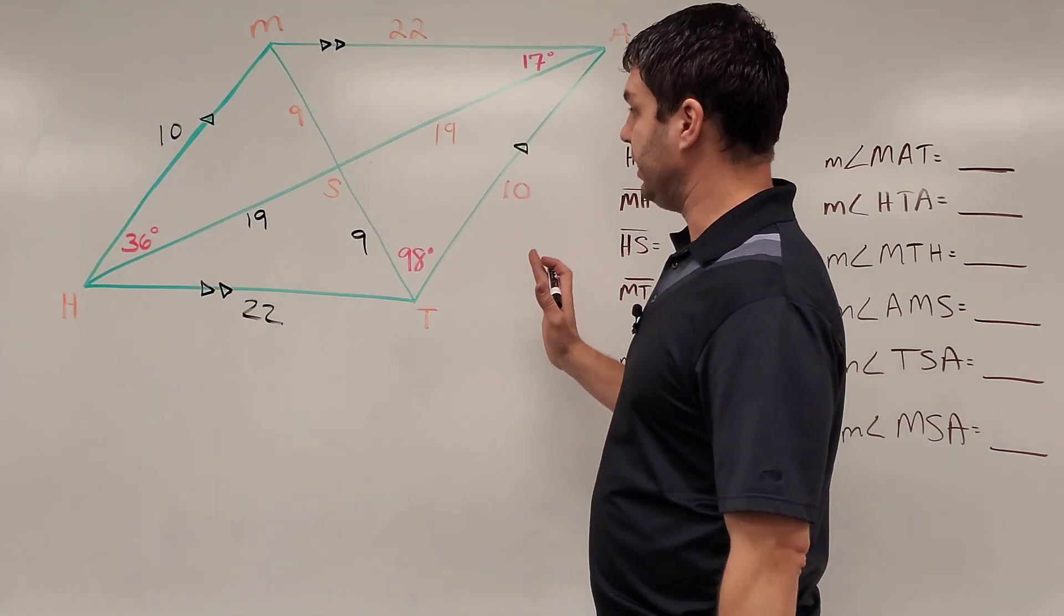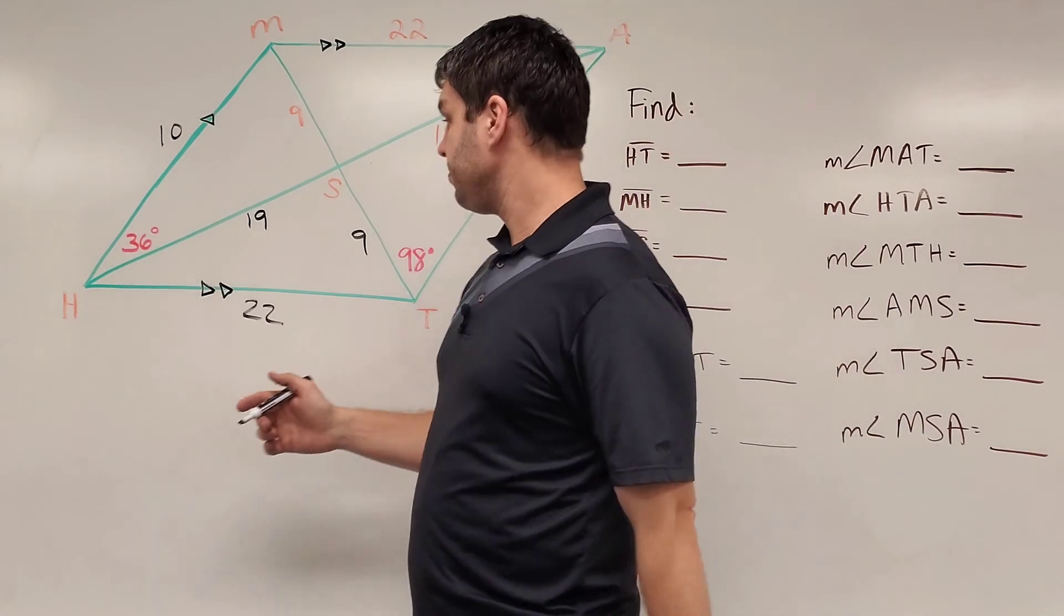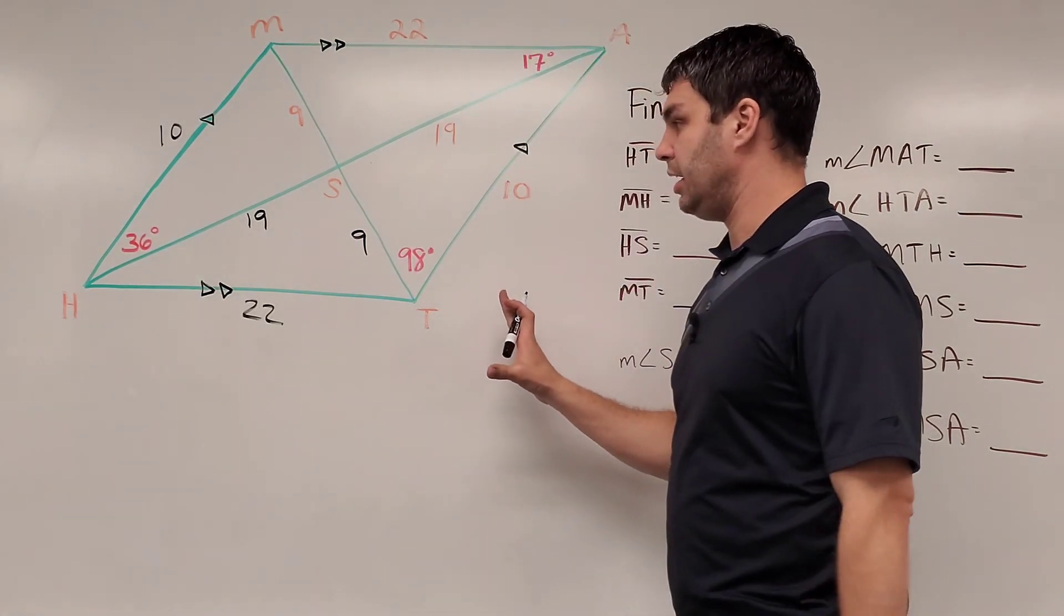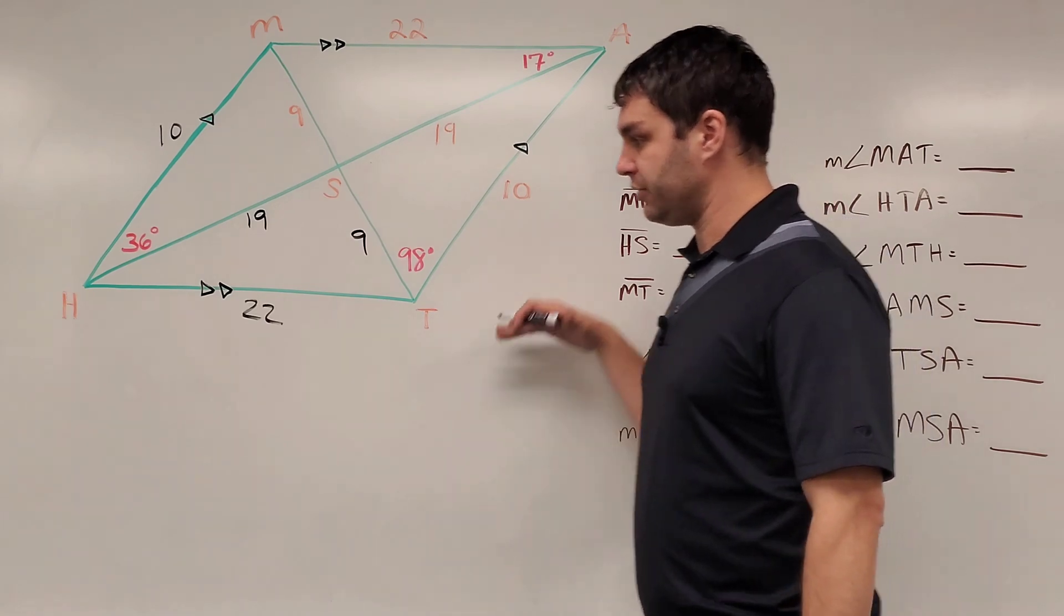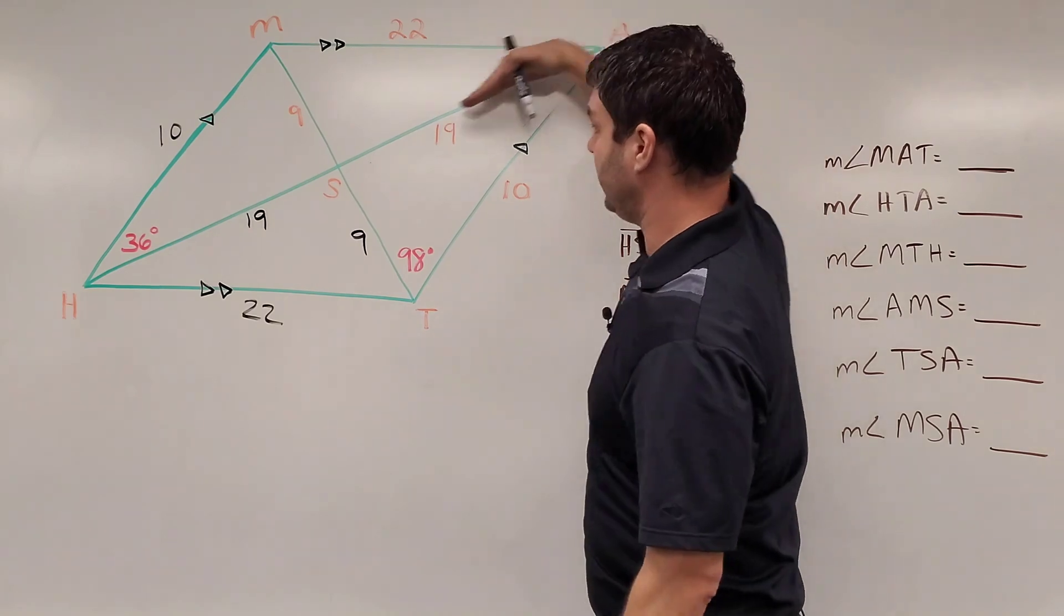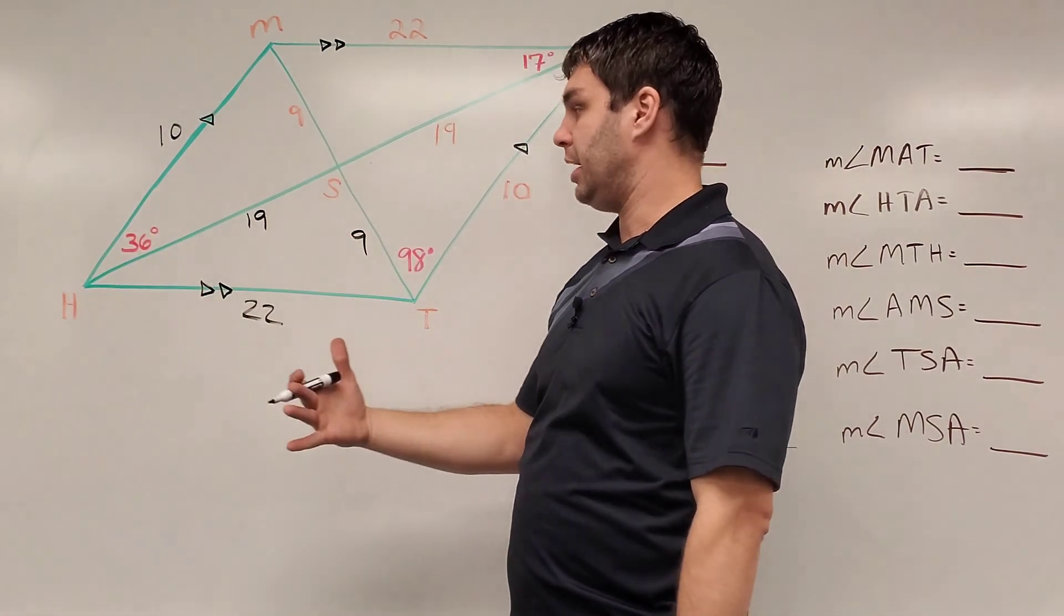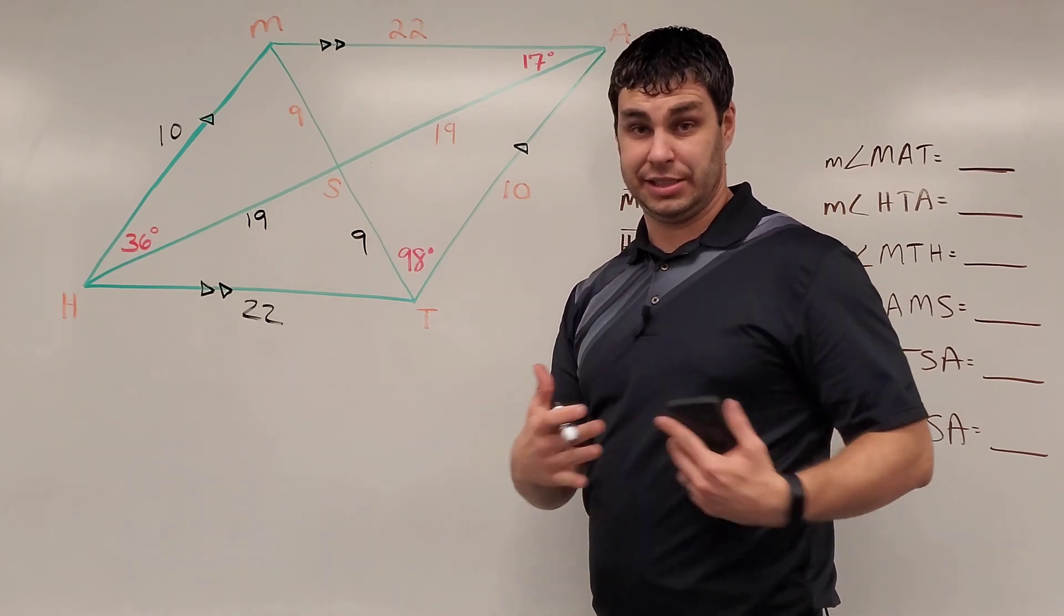I think that is all of the lengths that I need. Now let's turn our attention to the angles. Okay, so with this we can remember a few things. First off, since this is a parallelogram, these two sides are parallel to each other and they're being cut by a couple different transversals. We learned about that last semester. Now, that gives us alternate interior angles.